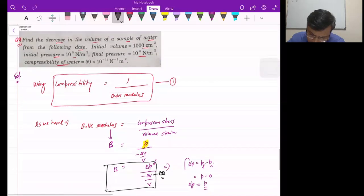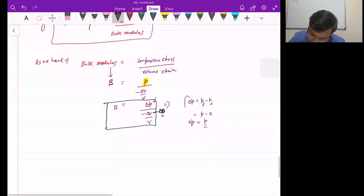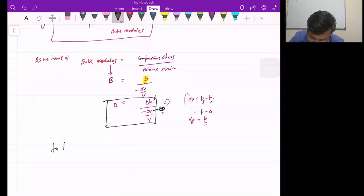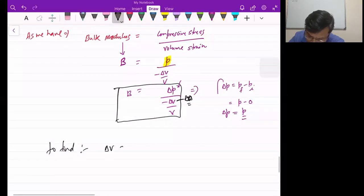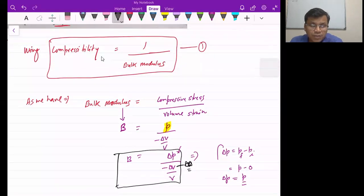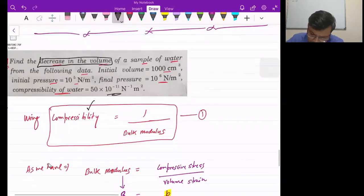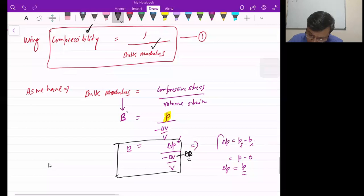So if we look at the question, what do we need to find - find the decrease in the volume. So directly we're being asked for delta V. That is, in this situation, B has a relation we saw above. Bulk modulus has a relation with compressibility and compressibility is given to us. This means that giving compressibility means bulk modulus is given to us.